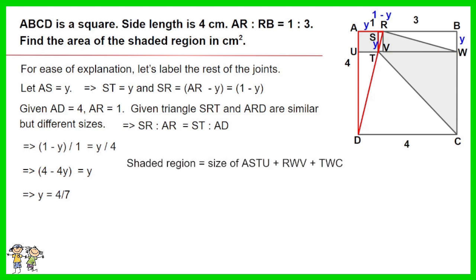Shaded region equals size of ASTU plus RWV plus TWC. Work out the equation. The answer is 7 and 3 over 49.